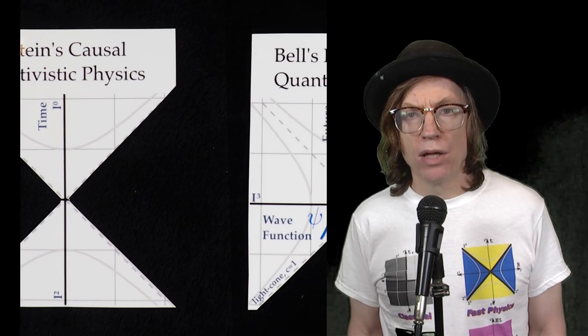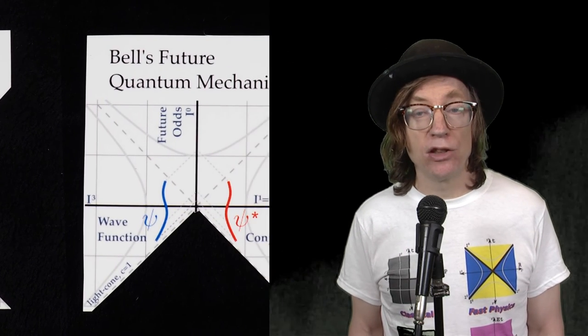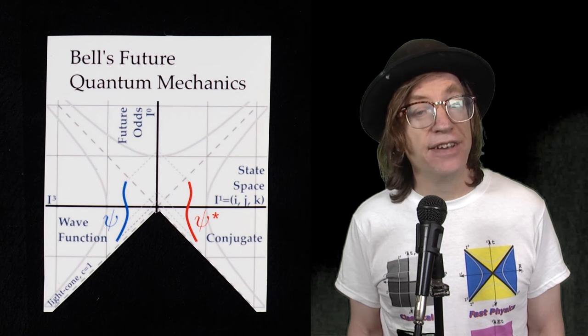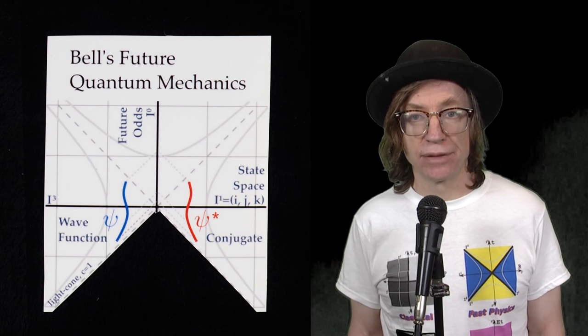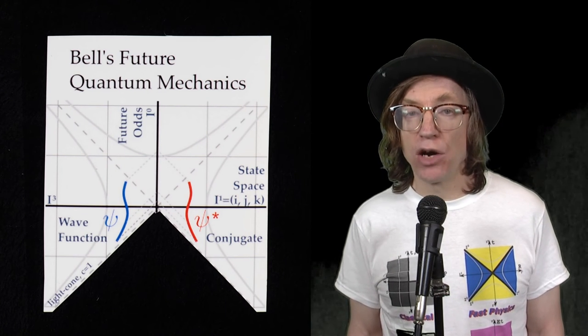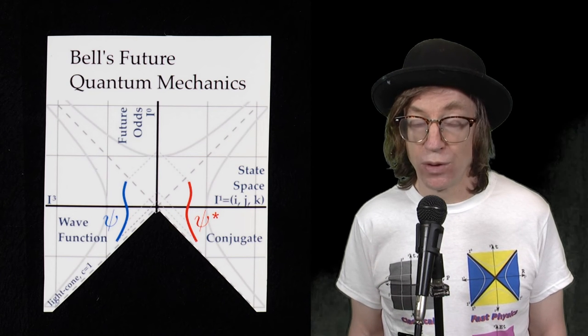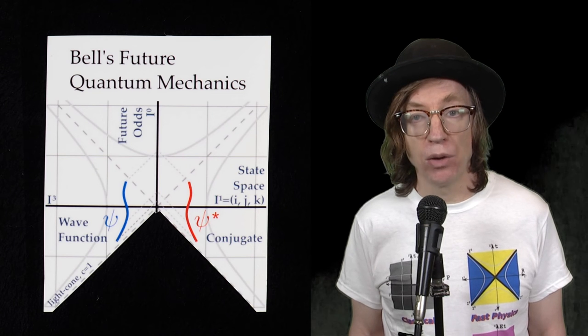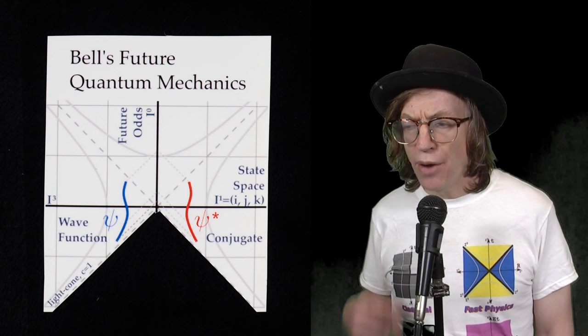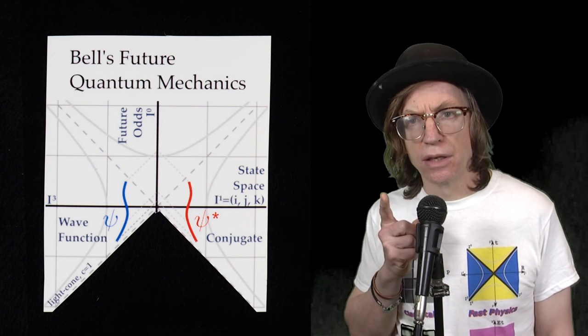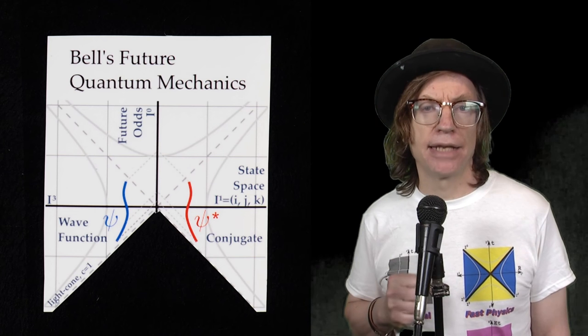Bell's inequality can distinguish between hidden local variable theories and non-local quantum mechanics. Experiments have shown that hidden local variable theories are wrong. Quantum mechanics is non-local. So how are you going to enforce that quantum mechanics is non-local?